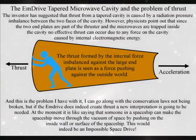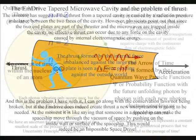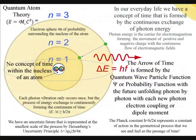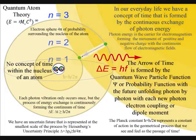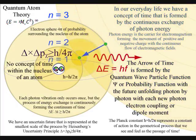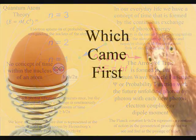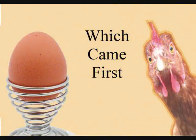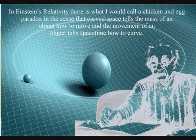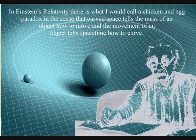But if we say that space and time are properties of quanta, then I believe we can explain why an m-drive tapered cavity can form what we call thrust. To understand this, we will need a mental picture of what we mean by space and time, or space-time. In Einstein's relativity we have space-time, but there is what I would call a chicken and egg paradox, in the sense that curved space-time tells the mass of an object how to move, and the movement of the object tells space-time how to curve.